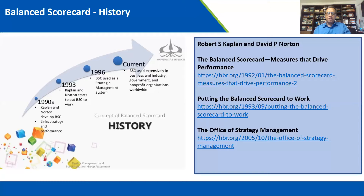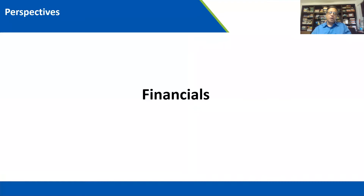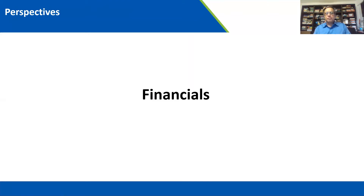I would suggest reading all three HBR papers — the links are available — it will give a good perspective. Now, one of the very important things about the Balanced Scorecard is the perspectives. 'Perspective' as a word we use often — what is your perspective of a situation, of new leadership, of economy performance. In the Balanced Scorecard, Kaplan and Norton laid out four key perspectives.